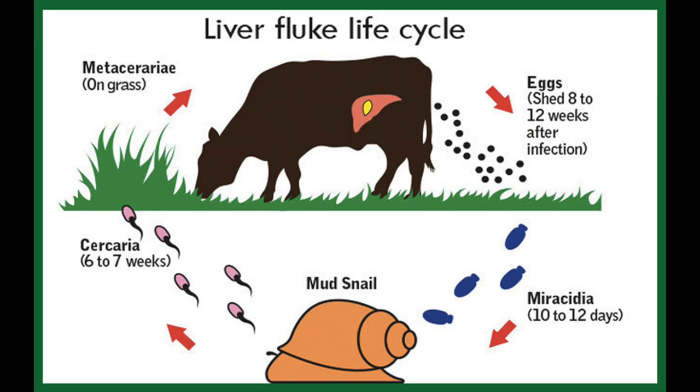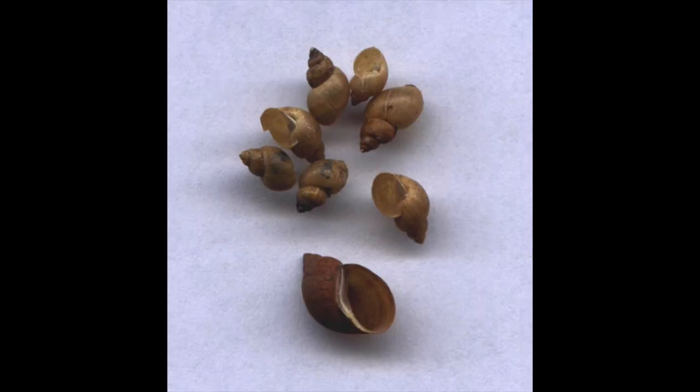Another host is called the intermediate host, because that's where you find the intermediate or larval stages of the parasite. Using a non-tapeworm example, liver fluke also uses a definitive and an intermediate host - the definitive hosts including cattle and sheep, whereas the intermediate host is the mud snail, which we've talked about in a previous video.